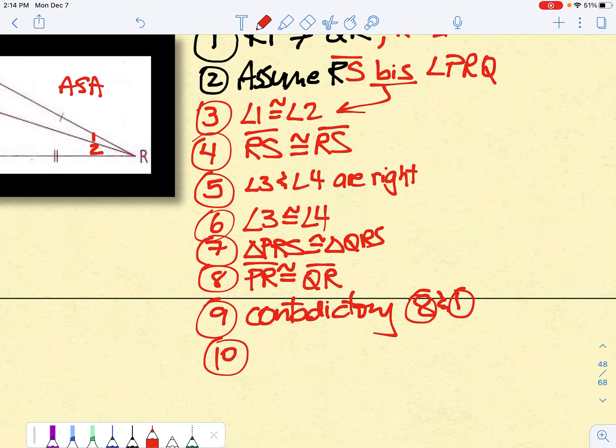Therefore, the assumed negation is false. And RS cannot bisect angle PRQ. Okay?